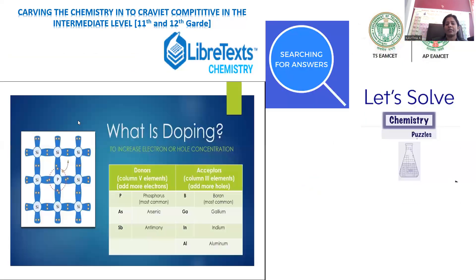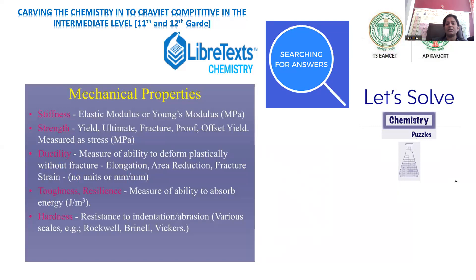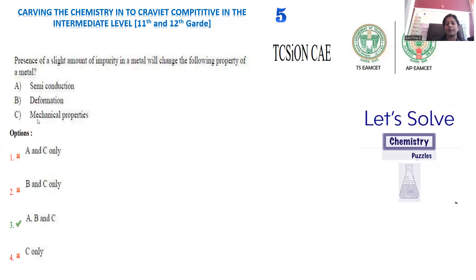Mechanical properties stand for stiffness, strength, ductility, toughness, resilience, and hardness of the material. Whenever any metal is added with a slight quantity of impurity, stiffness obviously rises, strength of the material also rises, and based on the percentage composition of impurity, ductility, toughness, and hardness also increase. The same examples used for deformation apply to mechanical properties as well. So for question number five, option number three is the correct answer.